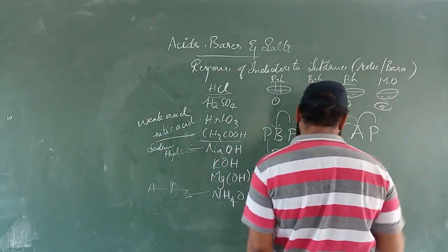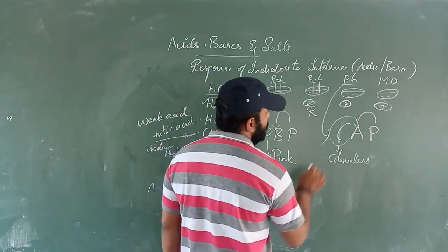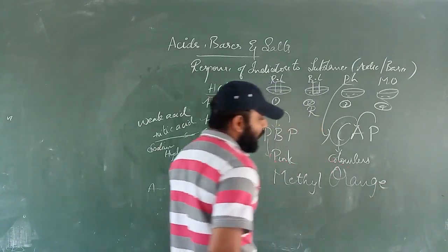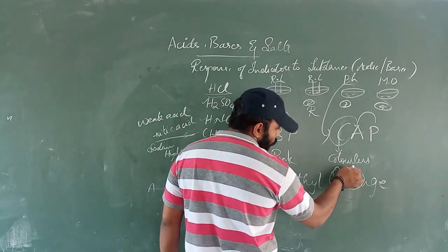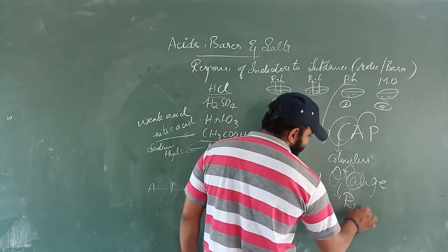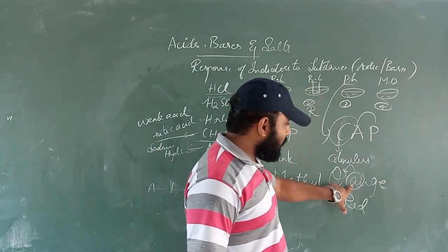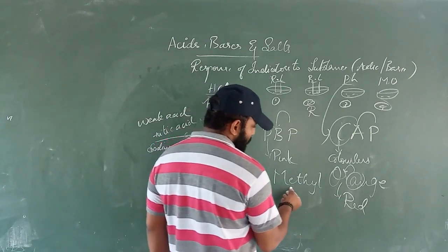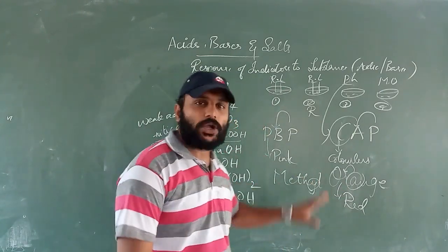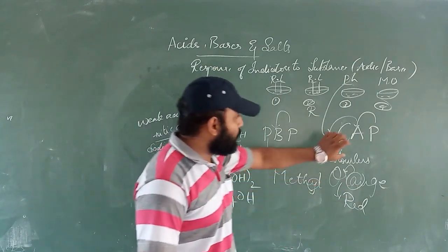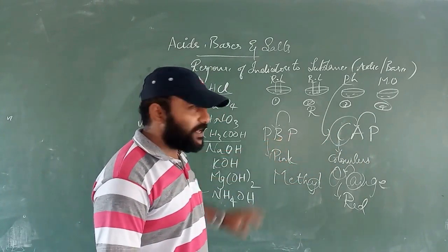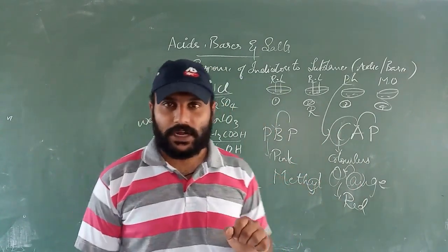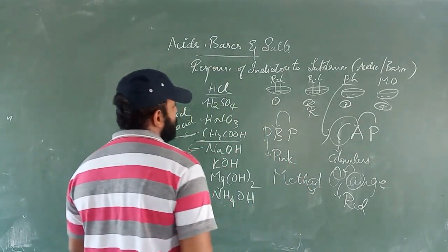For methyl orange, remember the shortcut ORA: methyl orange in acid gives red color, and in base it gives yellow color. So to summarize: phenolphthalein in acid is colorless, in base is pink; methyl orange in acid is red, in base is yellow.